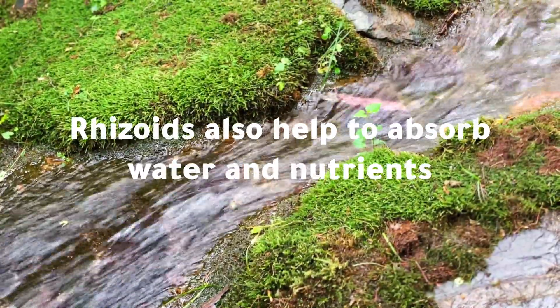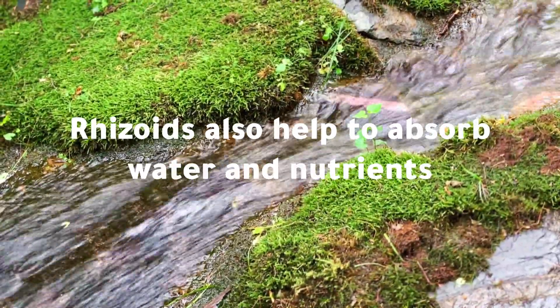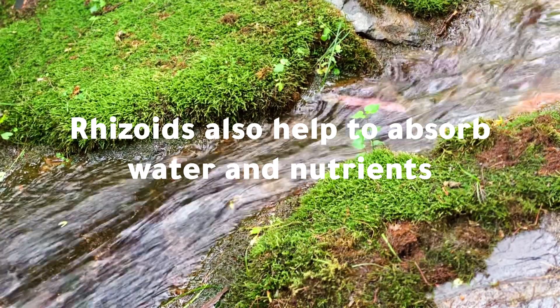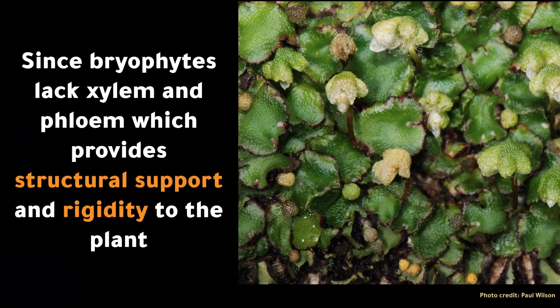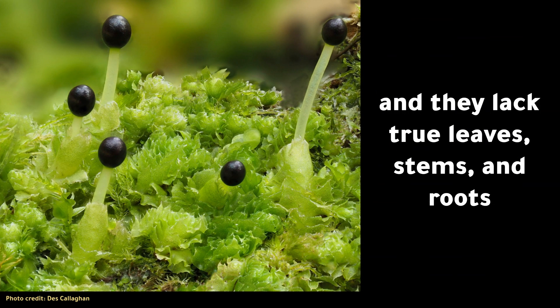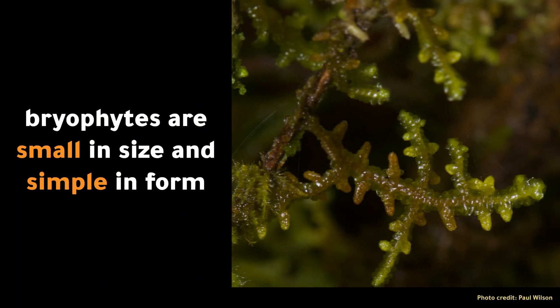Rhizoids also help to absorb water and nutrients. Since bryophytes lack xylem and phloem, which provide structural support and rigidity to the plant, and they lack true leaves, stems, and roots, bryophytes are small in size and simple in form.